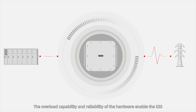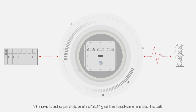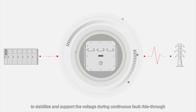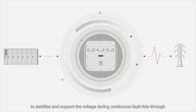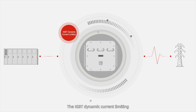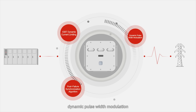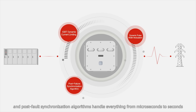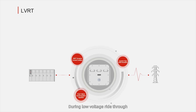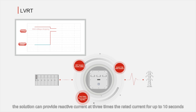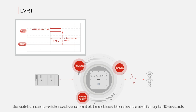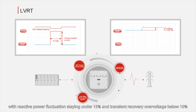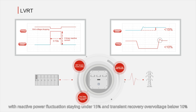The overload capability and reliability of the hardware enable the ESS to stabilize and support the voltage during continuous fault ride-through. The IGBT dynamic current limiting, dynamic pulse width modulation, and post-fault synchronization algorithms handle everything from microseconds to seconds during fault ride-through. During low voltage ride-through, the solution can provide reactive current at 3 times the rated current for up to 10 seconds, with reactive power fluctuations staying under 15% and transient recovery over-voltage below 10%.